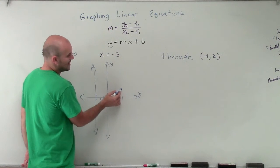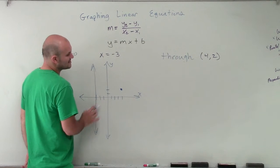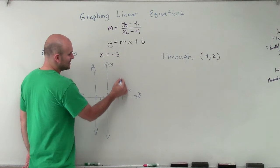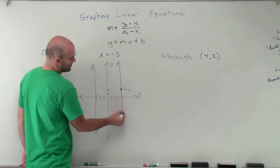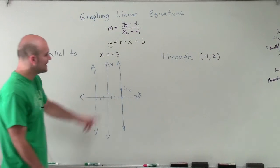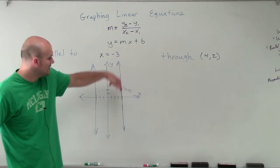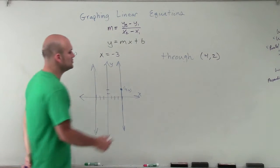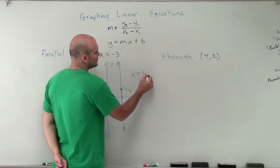Well, to draw a line that's going to be parallel with an undefined slope that goes through this point 4 comma 2, it has to be another vertical line. So if I graph a vertical line through the point 4 comma 2, it will now be parallel to the line x equals negative 3. And this new line is going to be x equals 4.